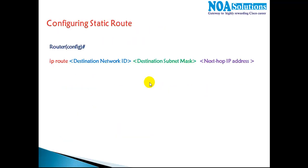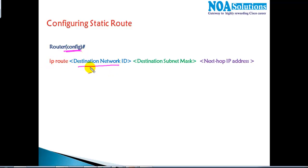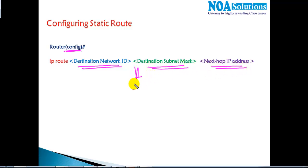To configure static routing, we need to go into config mode. We must define the destination network ID, the destination subnet mask, and the next-hop IP address. We will see more on this with a basic example in our next section.